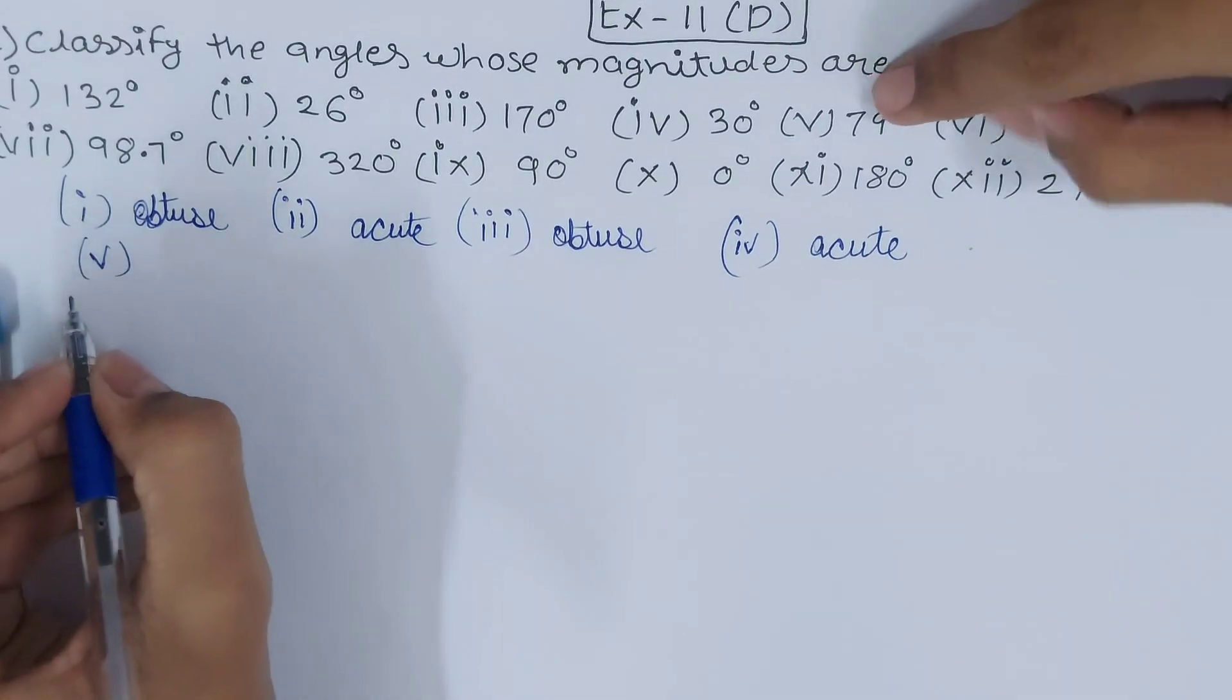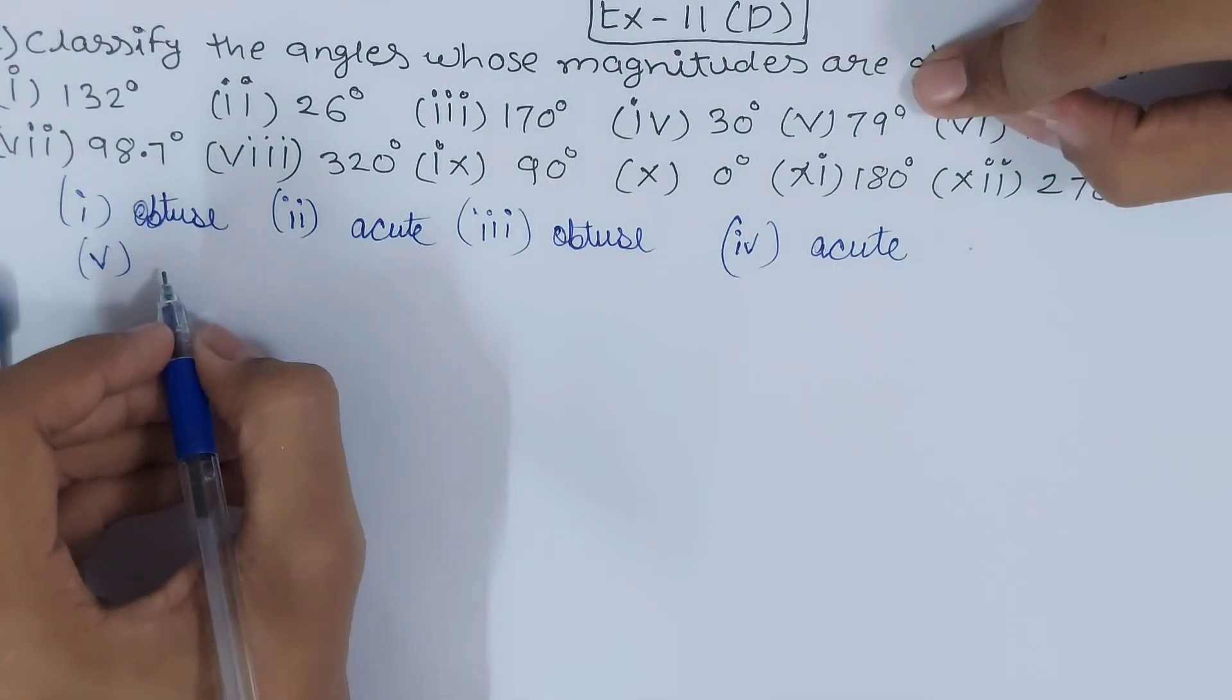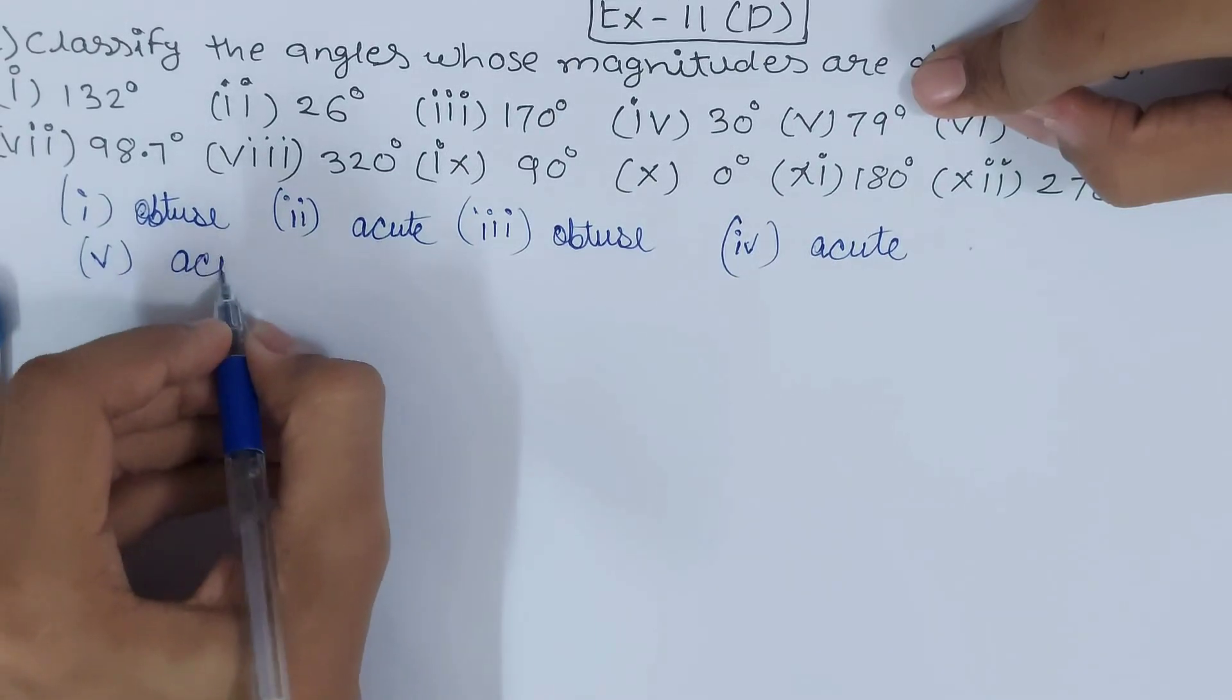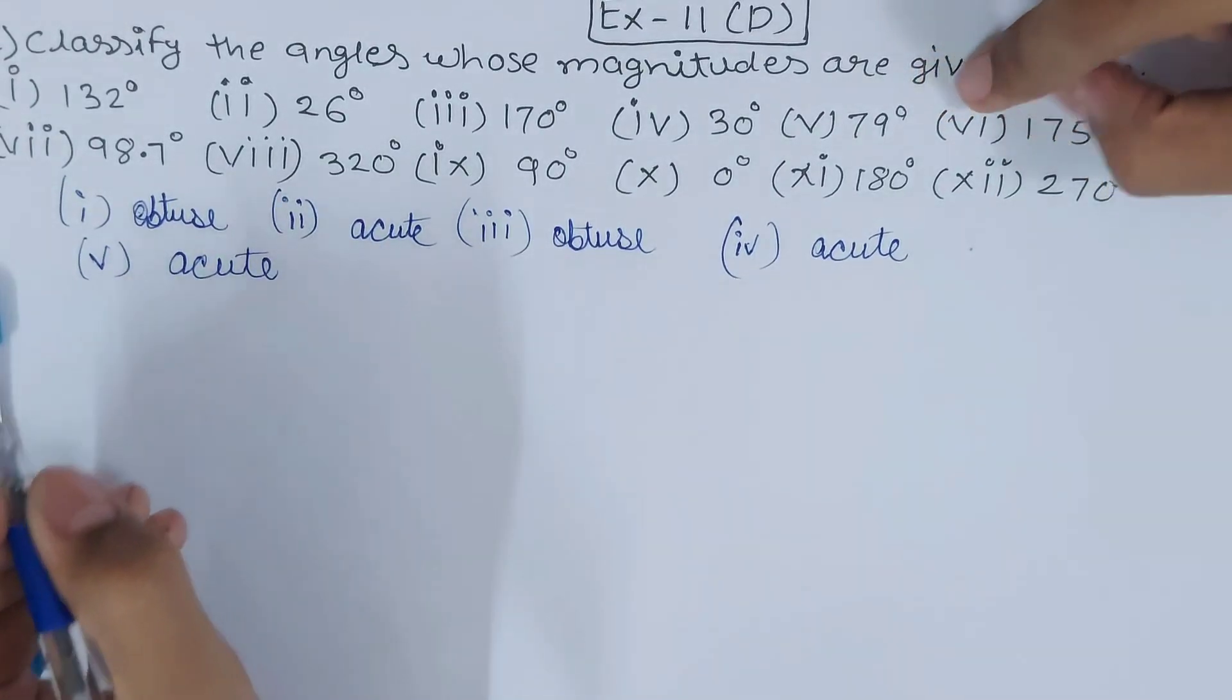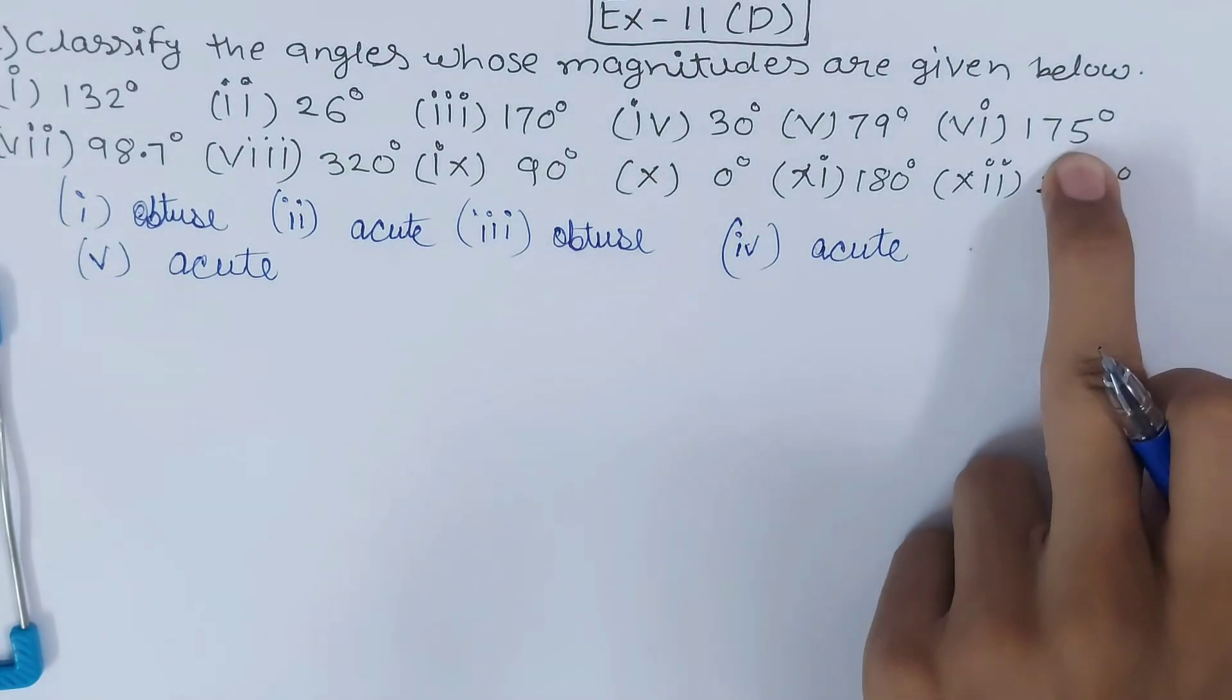Then fifth part - 79 degrees. 79 degrees is less than 90 degrees so this is also an acute angle.